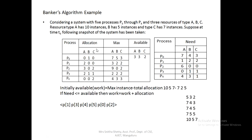For the allocation matrix, we read values for each process across resources A, B, C. The values are: P0 = 0,1,0; P1 = 2,0,0; P2 = 3,0,2; P3 = 2,1,1; P4 = 0,0,2. This is the input for the allocation matrix.